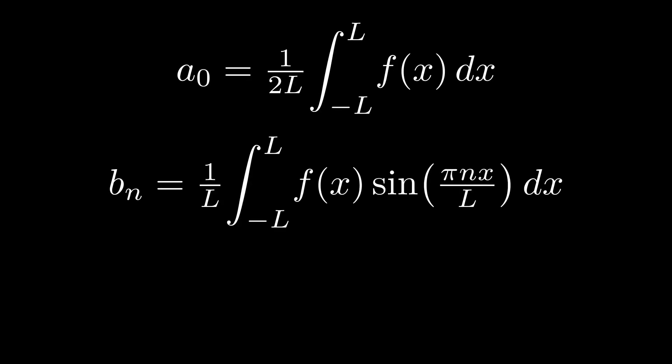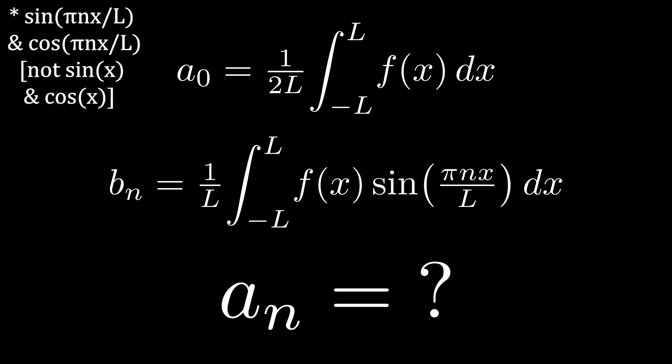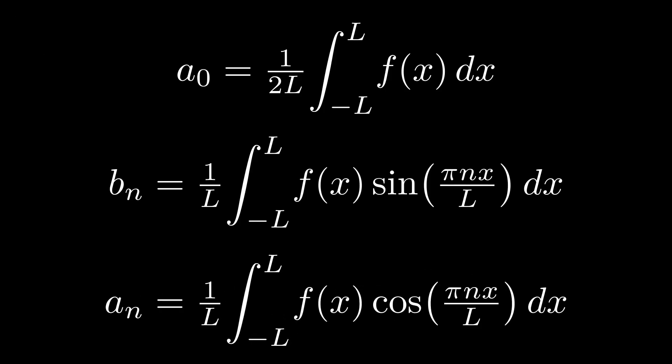So now we found a formula for the constant term a sub 0 and the sine coefficient b sub n of our Fourier series. What about the cosine coefficient a sub n? Fortunately, the way to find a sub n is basically exactly what we just did to find b sub n, except instead of multiplying the integrand by sine of x, we multiply by cosine of x. Using these formulas, we can find the Fourier series of a function with an arbitrary period of 2l. If you're interested, I encourage you to try finding the Fourier series of a simple polynomial using these formulas.